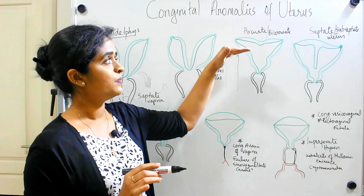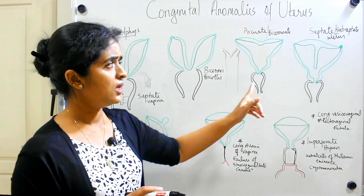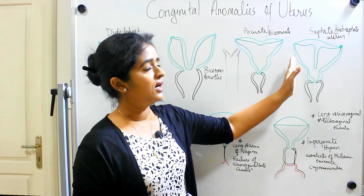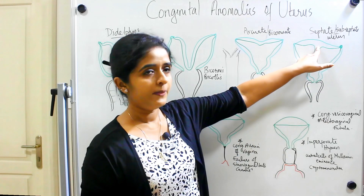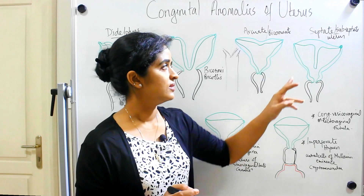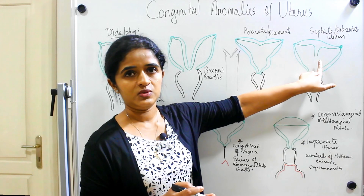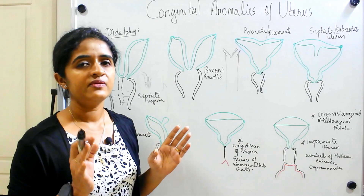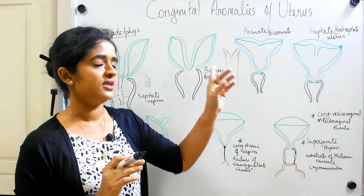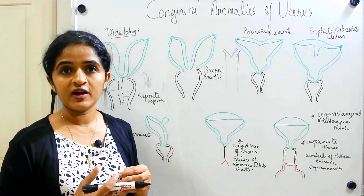If it is just a simple concavity in the upper part of the fundus, you call it arcuate uterus. The next condition is septate or subseptate uterus. Though the paramesonephric ducts are fused in the upper region, a small portion extends downwards so that the uterus is not completely united — that is septate uterus. If the septum extends only into the upper portion, the condition is known as subseptate uterus, where the uterine cavity is present but not completely fused.